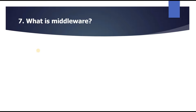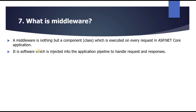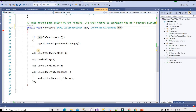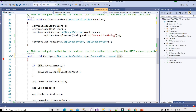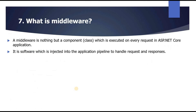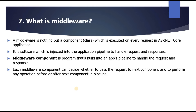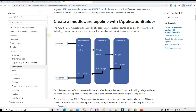The next question is: what is middleware? Middleware is a component class which is executed on every request in an ASP.NET Core application. It is software injected into the application pipeline to handle requests and responses. Each middleware component can decide whether to pass the request to the next component and can perform any operation before or after the next component in the pipeline.